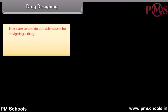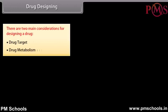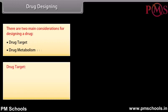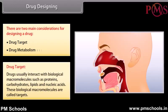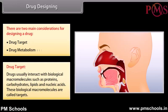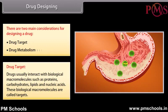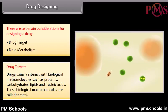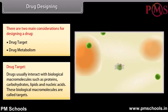Drug designing: There are two main considerations for designing a drug — drug target and drug metabolism. Drug target: Drugs usually interact with biological macromolecules such as proteins, carbohydrates, lipids, and nucleic acids. These biological macromolecules are called targets. The correct choice of drug target is important to obtain good therapeutic effects of a drug.